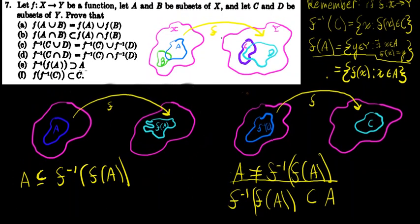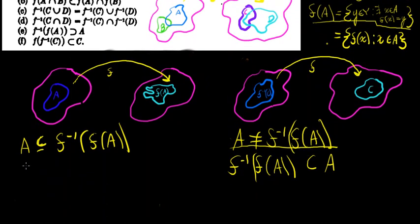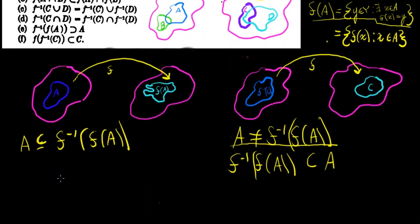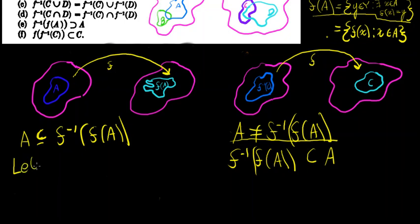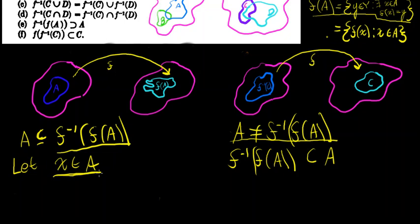We want to show that A is a subset of f⁻¹(f(A)). If we can show that every element in A must also be in the inverse image of the image of A, then we've proven what they've asked. So let's just take an element x in A, and if we can prove that every element with this property must also be in f⁻¹(f(A)), then we've shown that A ⊆ f⁻¹(f(A)).